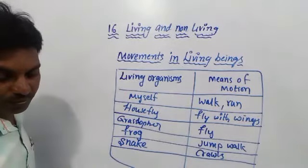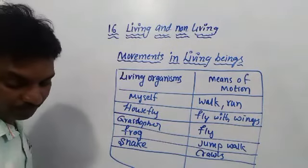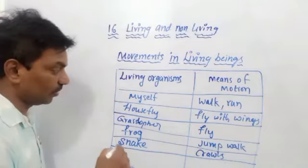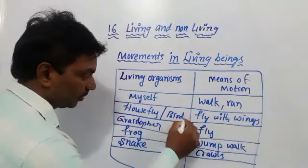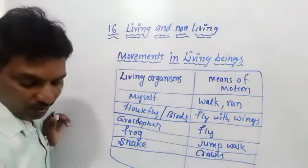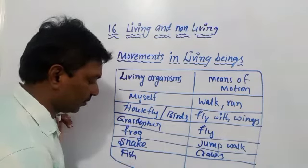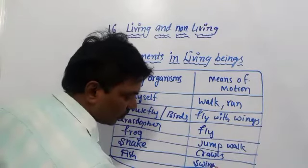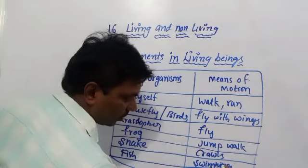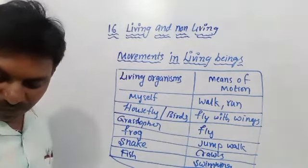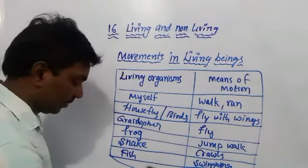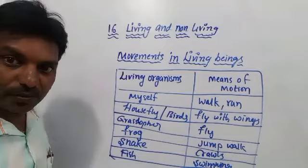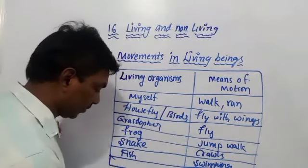The next organisms are birds and fish. Bird — a bird can fly. So birds also fly. Next, fish — fish swim in the water. The means of motion for fish is swimming.